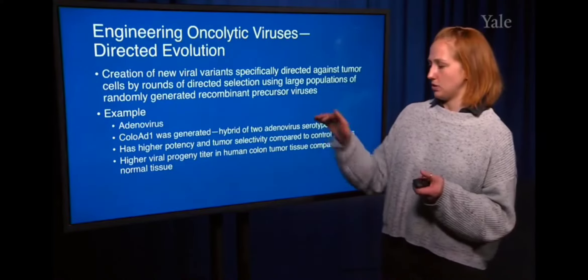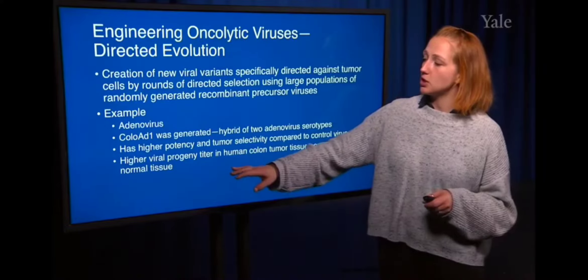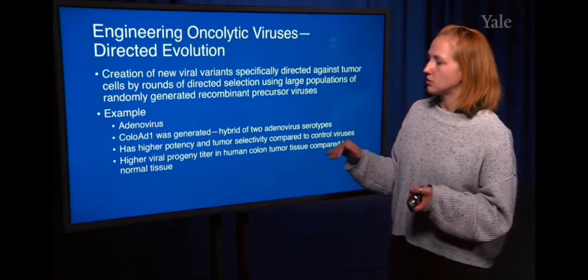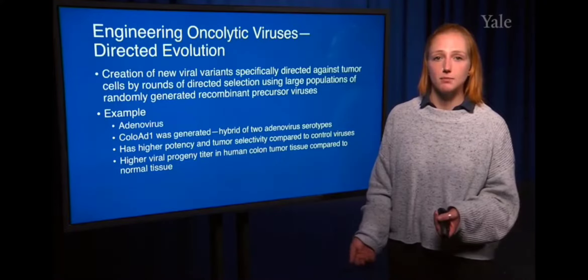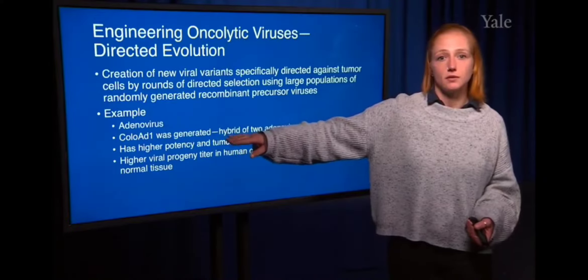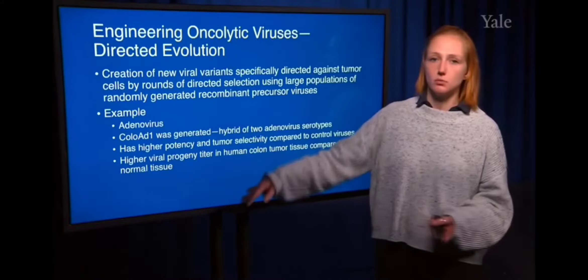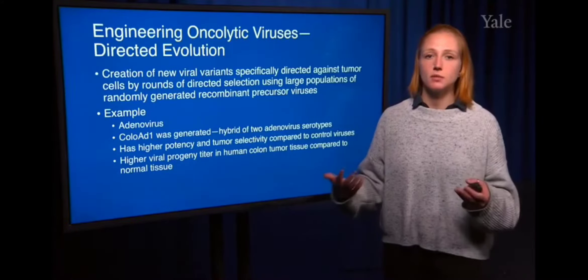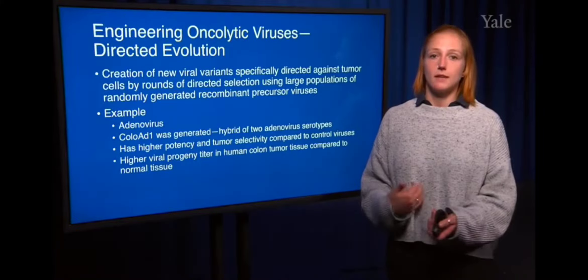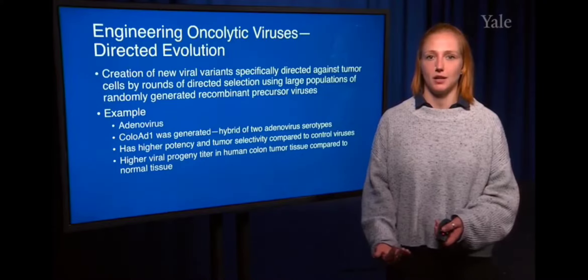They also found that you have much higher viral progeny titer in human colon tumor tissue compared to normal tissue. If you were to take this colo-AD1 oncolytic virus and infect tumor cells as opposed to normal tissue cells, the tumor cells produce a much higher viral titer. This implies that there's much more replication and infection happening, meaning more death of these tumor tissues as well.